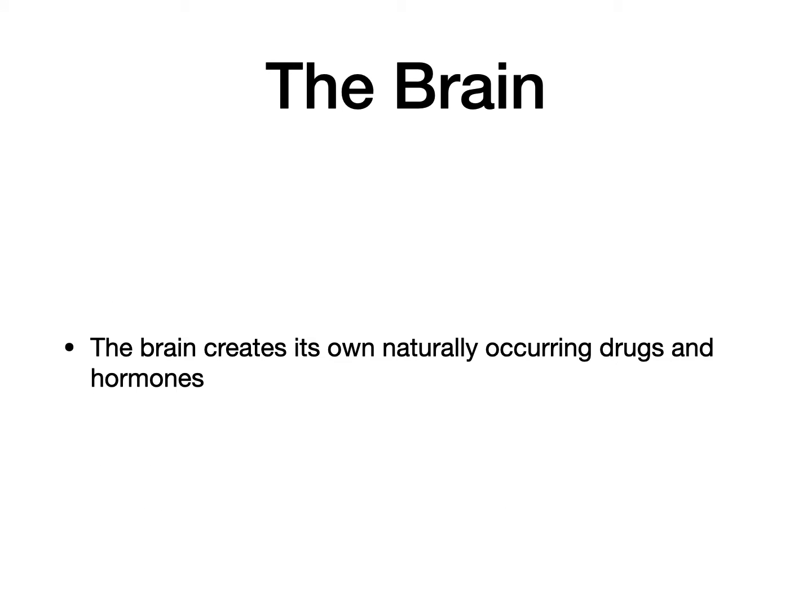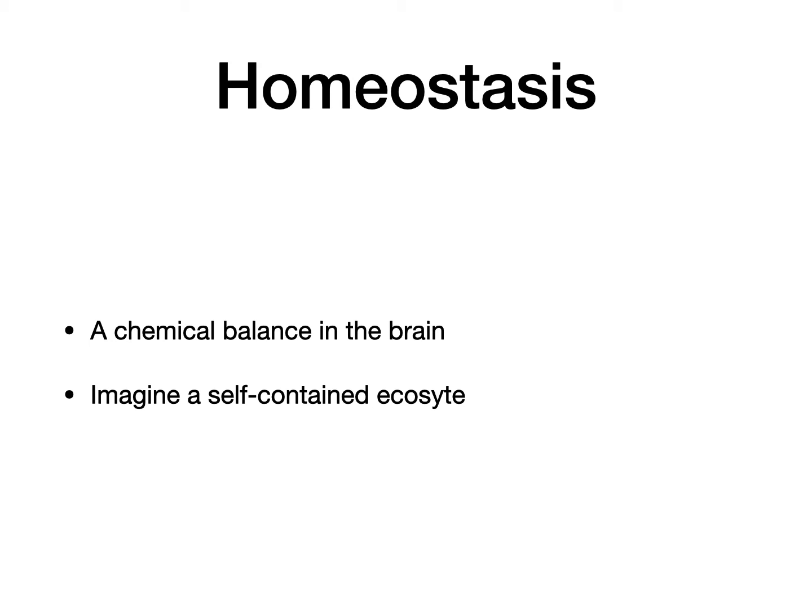The human brain is phenomenally complicated, and we really don't have a full understanding of how it works. But what we do know is that it creates and secretes its own naturally occurring chemicals, drugs, and hormones. Things like adrenaline and endorphins are things you've probably heard of. It works by way of homeostasis, which is essentially a balance in the brain, and it's a very delicate balance. We as human beings don't even have a complete list of all the chemicals, drugs, and hormones that the brain creates and excretes. Still less do we understand how they all balance and interact with each other. But what we do know is that it is a very delicate balancing act orchestrated by the brain.